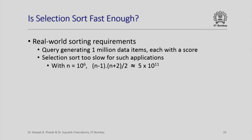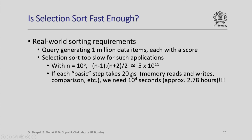Here is a simple calculation showing why. If n = 1 million, then (n-1)(n+2)/2 — the number of basic steps required by selection sort — is roughly 5 × 10^11. A basic step involves reading two elements of an array, comparing them, and perhaps updating a variable, so there are memory reads and writes involved. If each basic step takes 20 nanoseconds — quite optimistic given today's technology — multiplying by 5 × 10^11 gives 10^4 seconds, which is roughly 2.78 hours. That is completely unacceptable: no one wants to wait 3 hours for search results to be ranked.